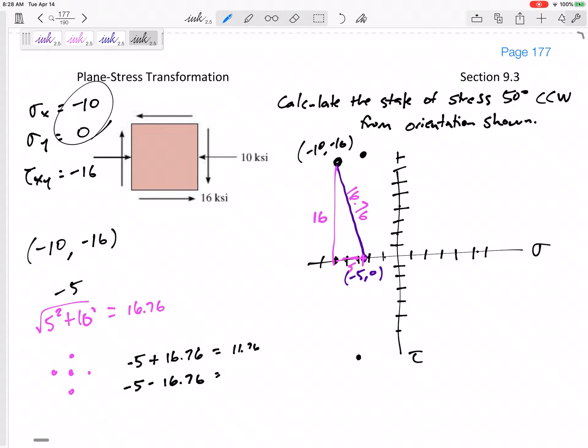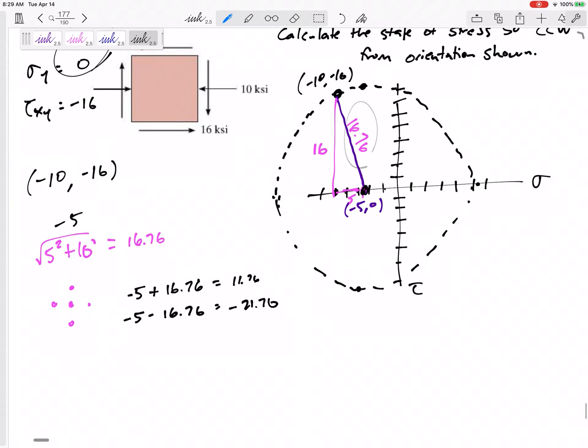These aren't really spaced properly. If I'd really drawn these out well, my circle would look more like a circle and less like a weird oval type shape. Here is my circle, centered at negative 5 with radius 16.76.